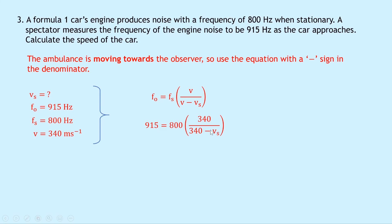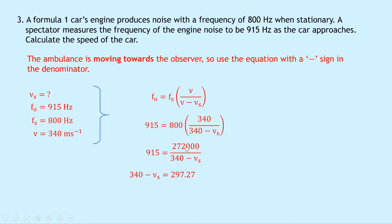To get VS on its own we manipulate the equation. First, 800 times 340 gives a simplified numerator of 272,000, so 915 equals 272,000 divided by (340 minus VS). Cross-multiplying swaps the terms: 340 minus VS equals 272,000 over 915, which gives 297.27. Adding VS to both sides and rearranging gives VS equals 340 minus 297.27, so VS equals approximately 43 metres per second.